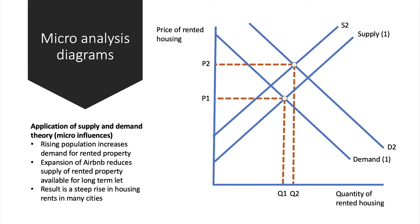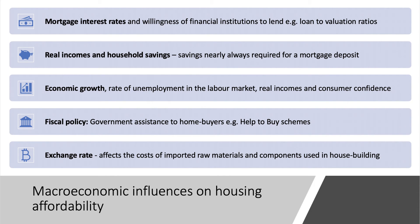When you get to macro influences, think about the bigger picture of the whole economy. Fundamentally, the cost of a mortgage loan is part of monetary policy, so mortgage interest rates affect affordability. The financial sector more broadly — particularly the willingness of mortgage lenders to give out loans and limits on loan-to-valuation ratios — also matters. Real incomes and household savings make a big difference at a macro level, as people need savings for a mortgage deposit, and recently real incomes have been squeezed while household savings remain low.